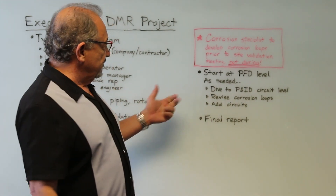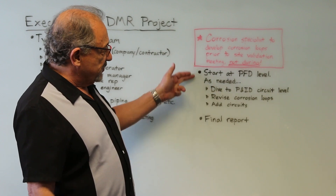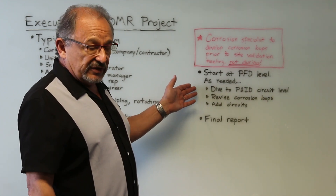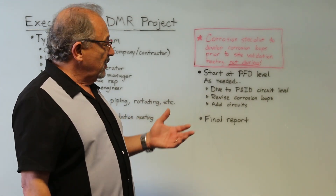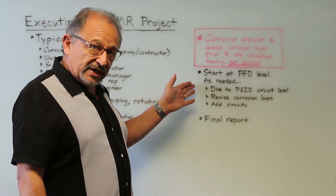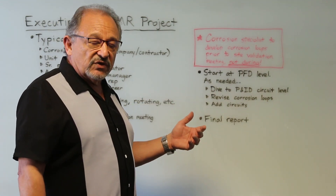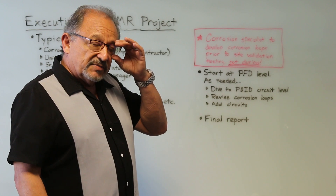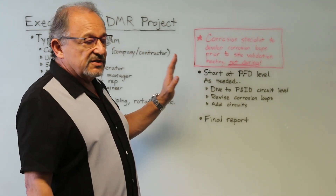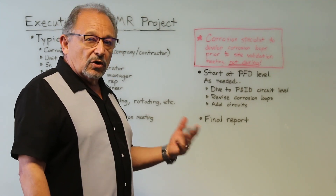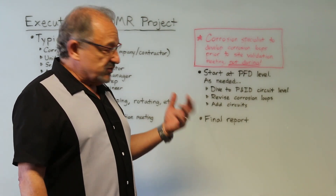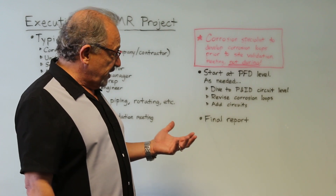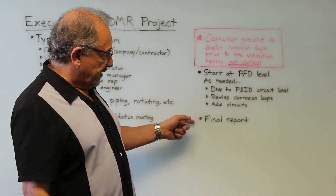Going back to the earlier information, we are going to come up with a circuit list. As part of that, to leverage this effort, we may also decide to look at integrity operating windows — for each piece of equipment, each circuit, or each loop, depending on the level of detail needed. We may define integrity operating windows such as chloride content, temperatures, and so forth, and determine the limits we need to stay within, making that part of the final report.